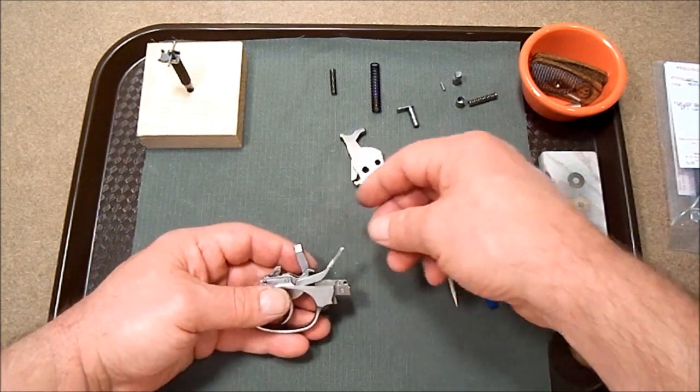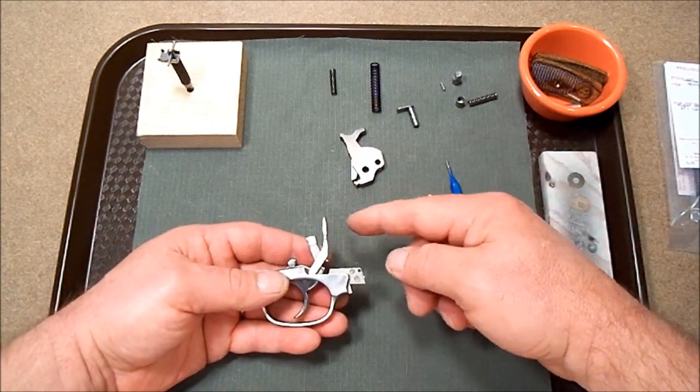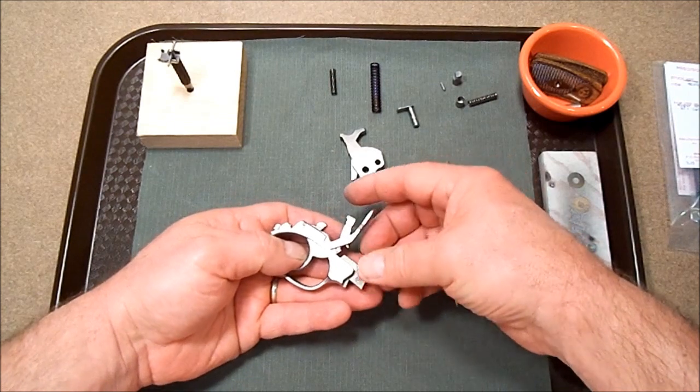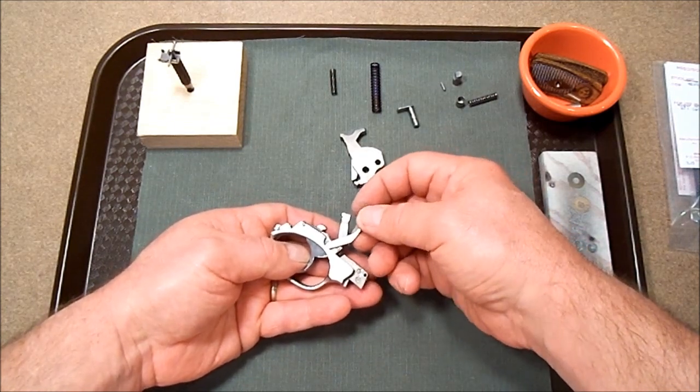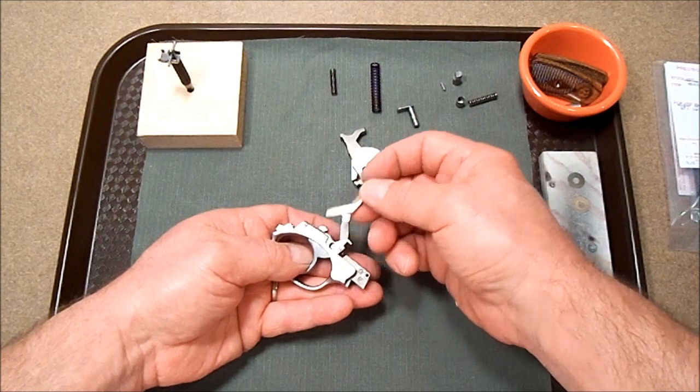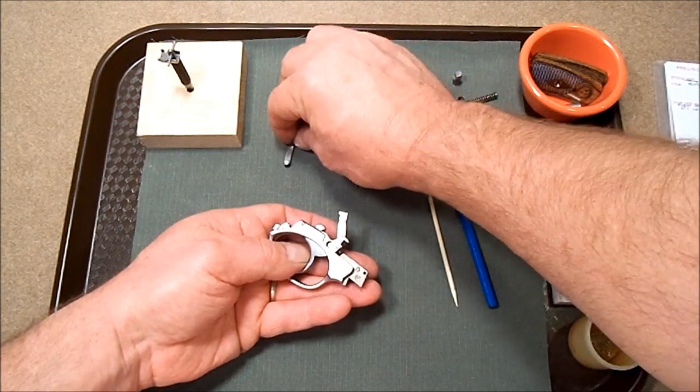Okay, next we're going to turn our attention to the transfer bar. And we're going to pull back just slightly on the trigger so that we can release the transfer bar. We'll set it aside.